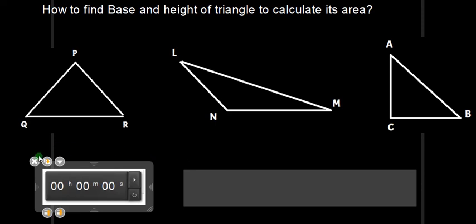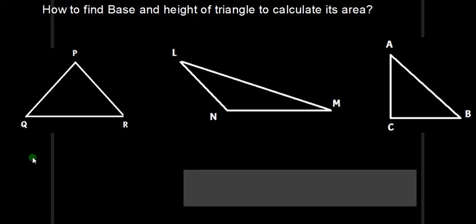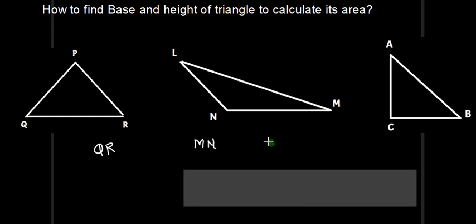Okay, time up. Now you must have written what base of the triangle is to be taken according to you. I haven't seen your notebook, but still I can guess that 90% of students have written that the base of triangle PQR is QR, the base of triangle LMN is ML, and the base of triangle ABC is BC. So that is the base 90% of students have written.